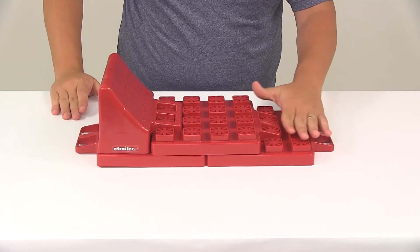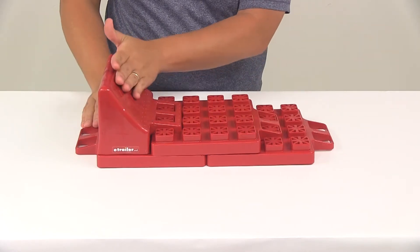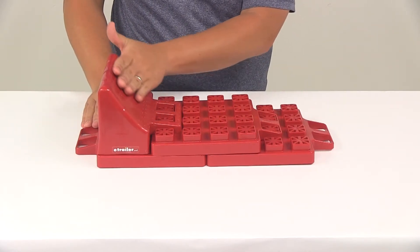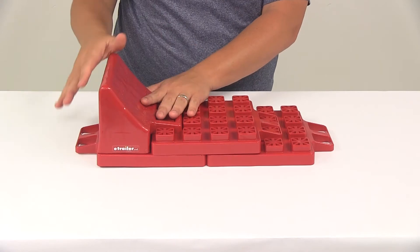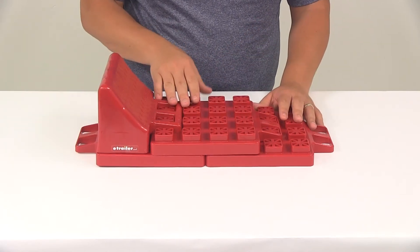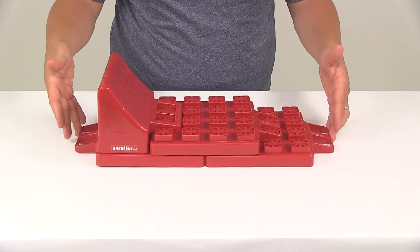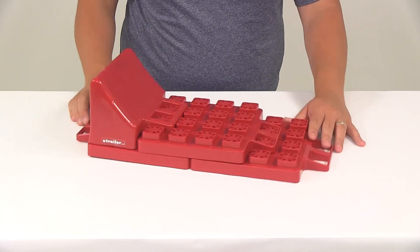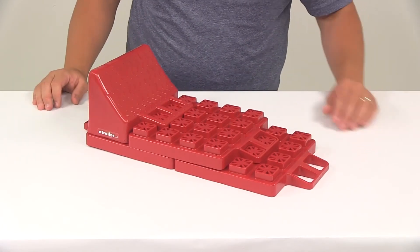And then as you drive up that's going to create that chock on the highest level which would stop the RV from being able to go forward on the other side of the stacker system. That's going to do it for today's look at the Valterra stackers wheel chock.